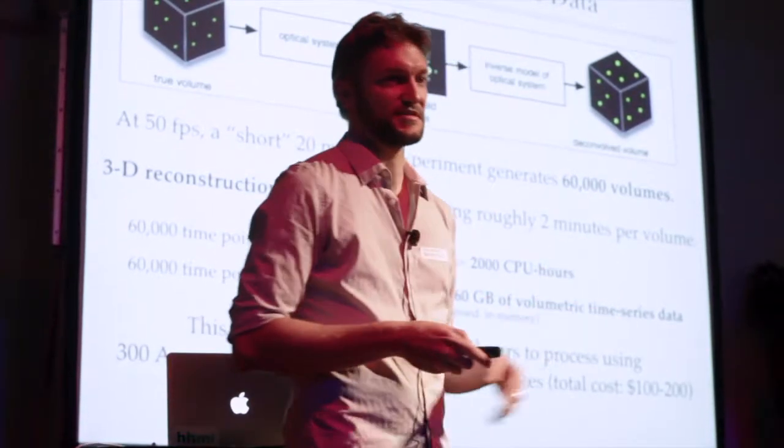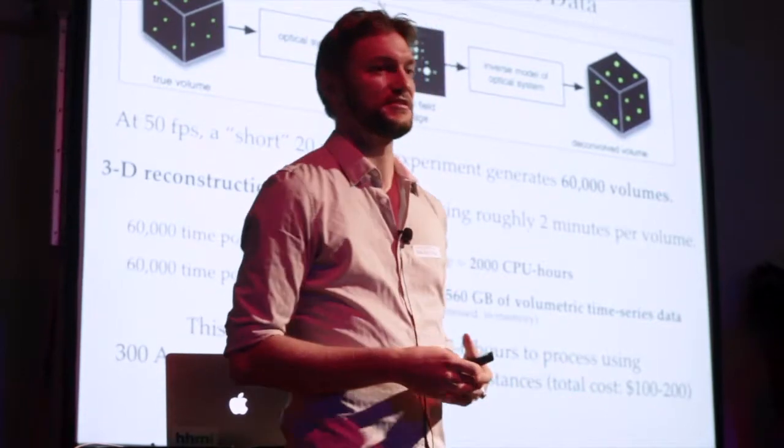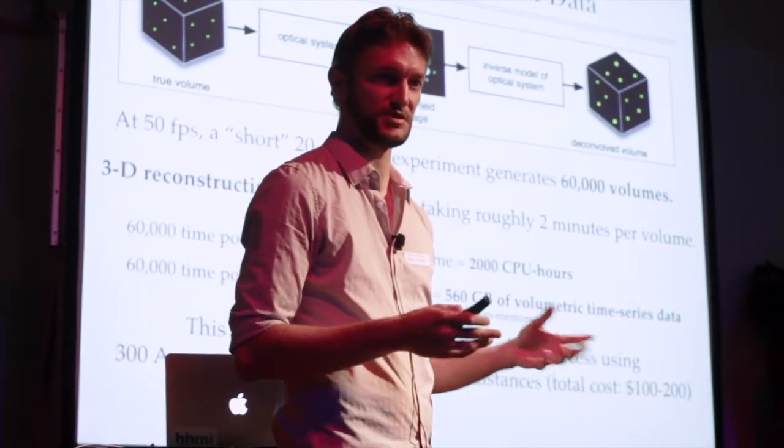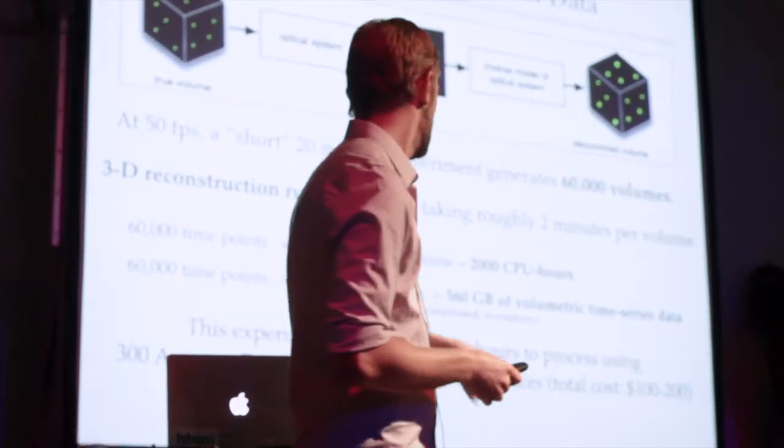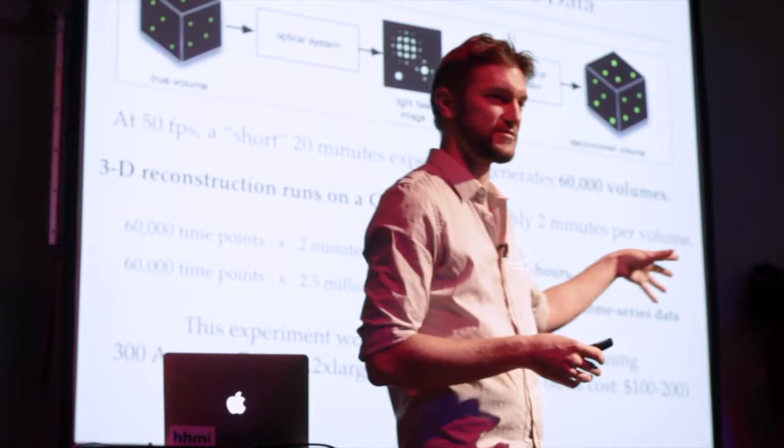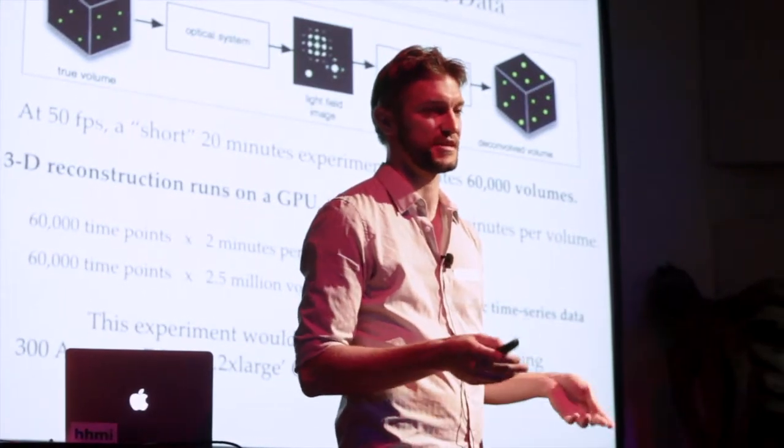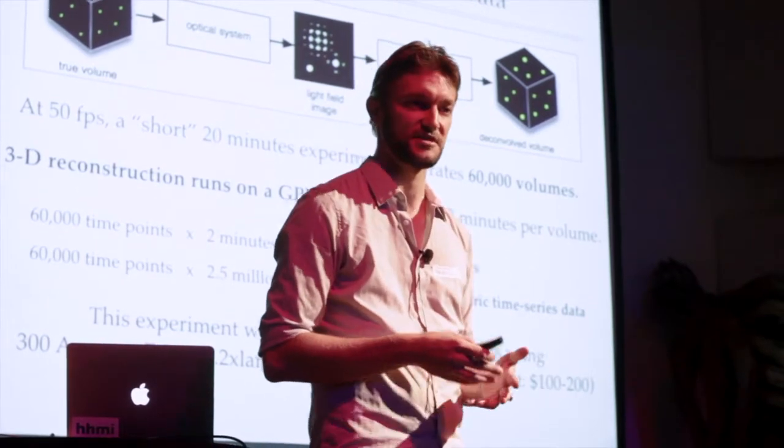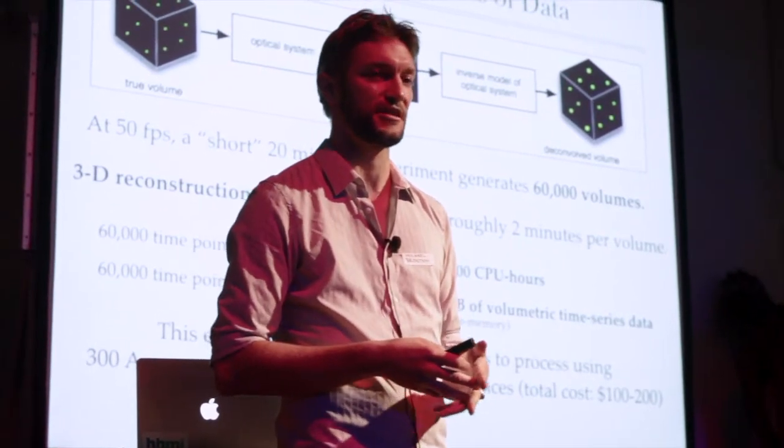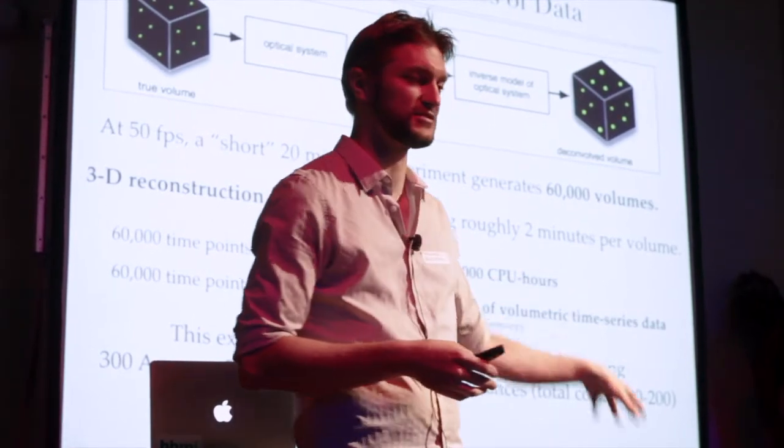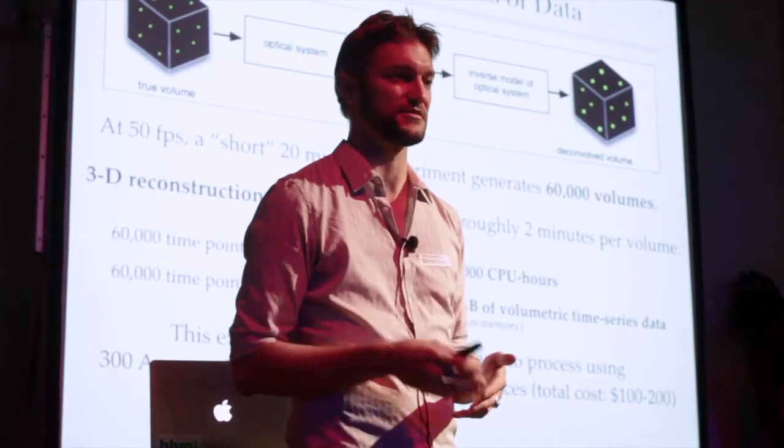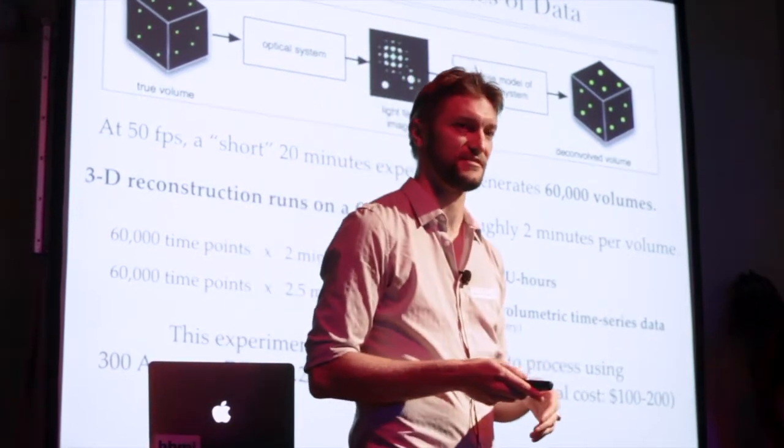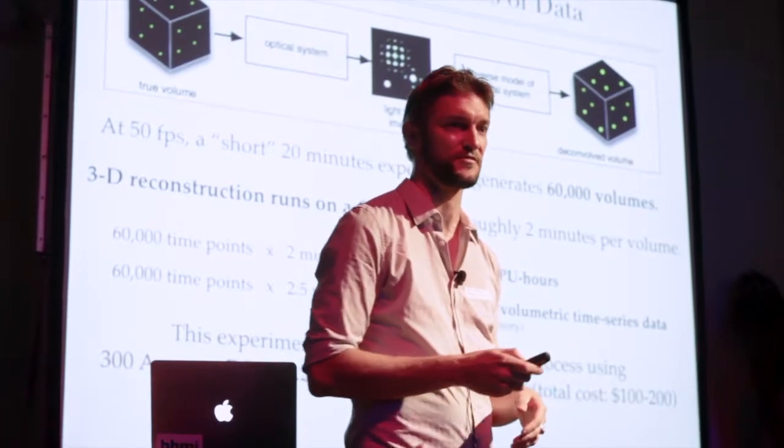Now what we do to make this more tractable and useful operationally is we parallelize this on Amazon Web Services using their GPU instances. And this, when it's parallelized across 300 different machines, it only takes three to six hours. And when you bid on these spot instances, which are a very cheap way to get compute out of the cloud, it only costs about $100 to $200 per time series to deconvolve. So it's a cost you have to factor into what you're doing, but it's not prohibitive.